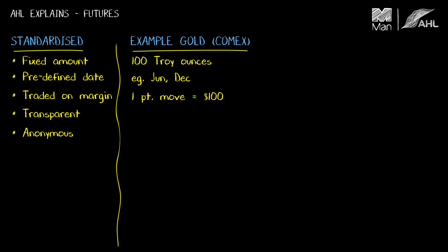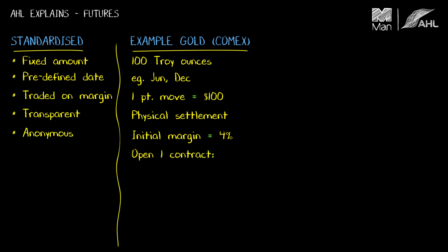This contract is physically settled, so if you hold it to expiry you either have to deliver or receive gold physically. The initial margin requirement is 4% — this number may change, but that's where it is now. So in order to open one contract, I would have to post margin to the exchange: 4% multiplied by 100 ounces multiplied by the quoted price of $1,200, which comes to $4,800.